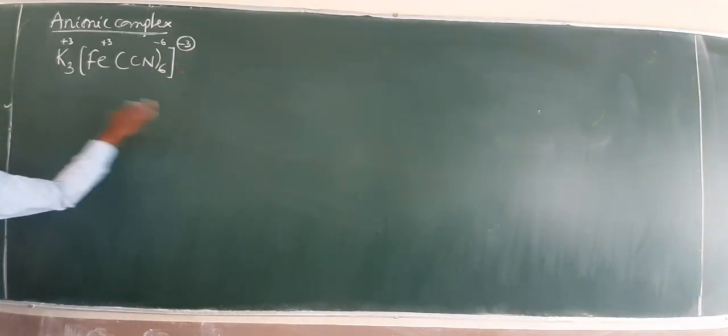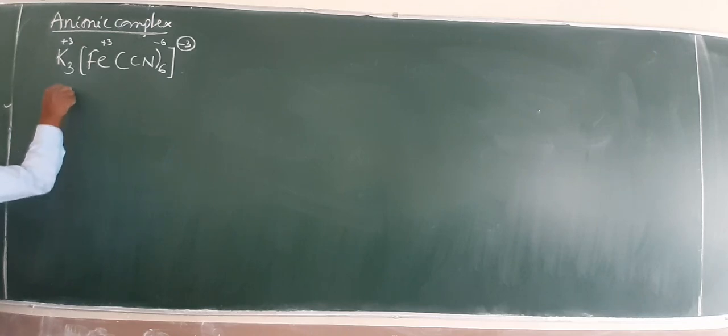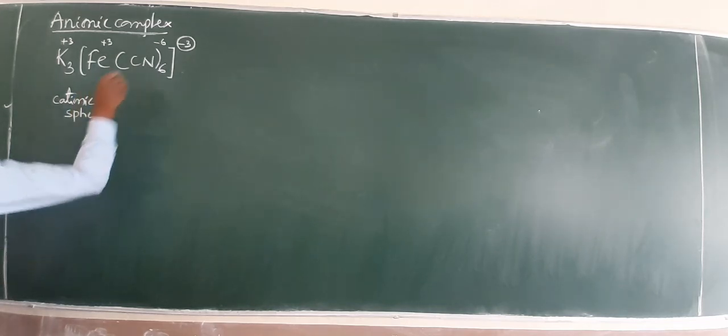The net charge of the complex is minus 3. Obviously it is anionic. Now, how to mention? Very simple. Here, cationic sphere, and then, ligand.